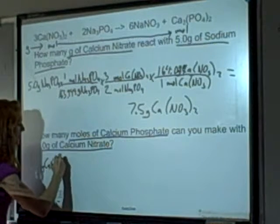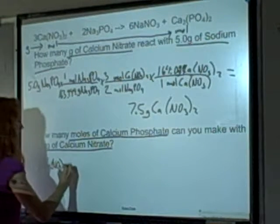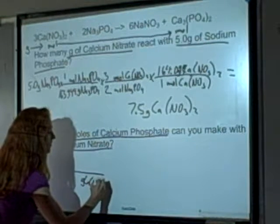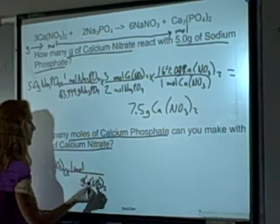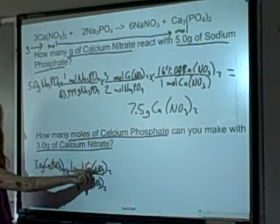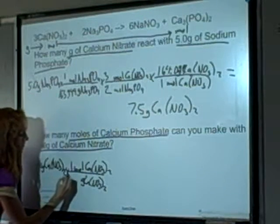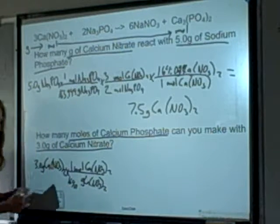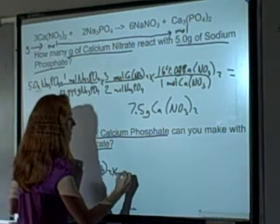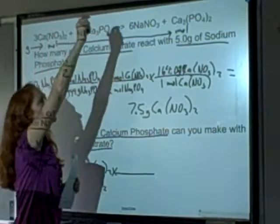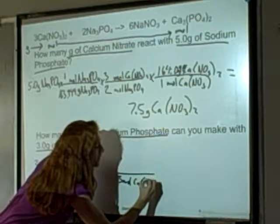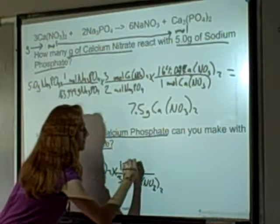This is great practice for polyatomic ions — we keep seeing NO3. Nitrate is NO3 with a 1− charge. I go from grams of Ca(NO3)2 to moles using the molar mass. 1 mole of calcium nitrate is 164.094 grams. Now I have moles of calcium nitrate, and for every 3 moles of calcium nitrate, I make 1 mole of calcium phosphate.